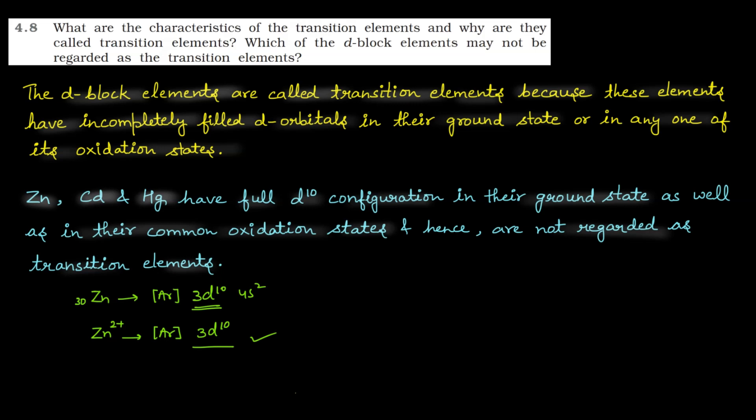Therefore we will say that zinc is not a transition element. So with zinc, you have the same kind for cadmium and mercury. These three elements we may consider d-block elements and not transition elements. Clear?